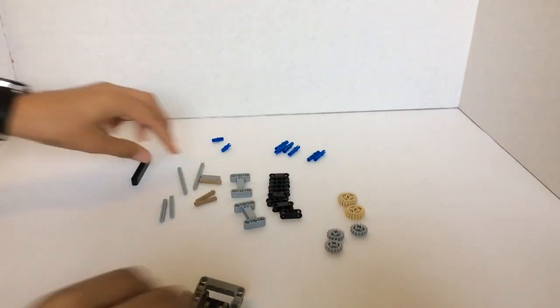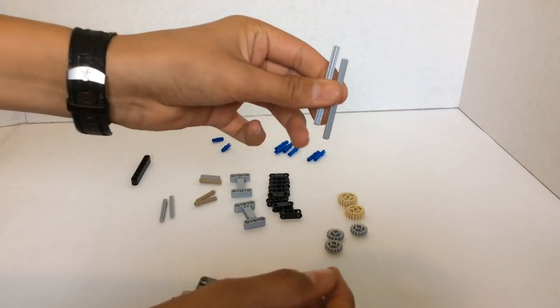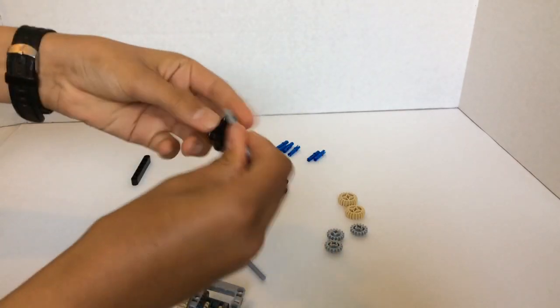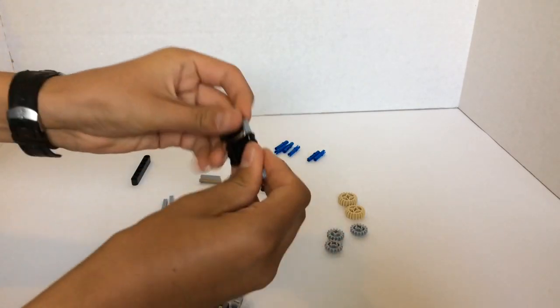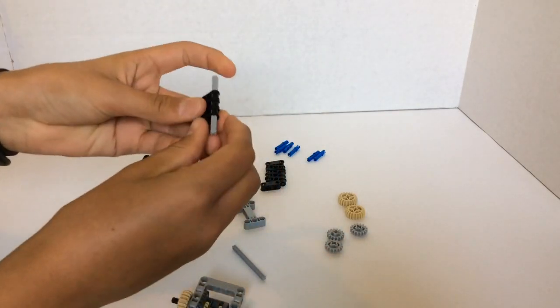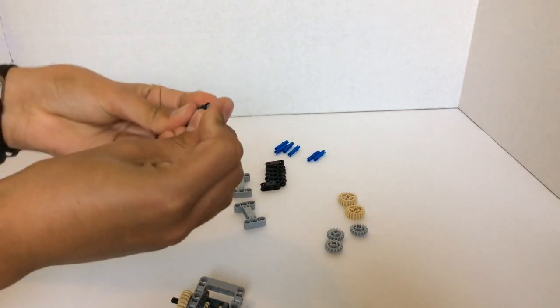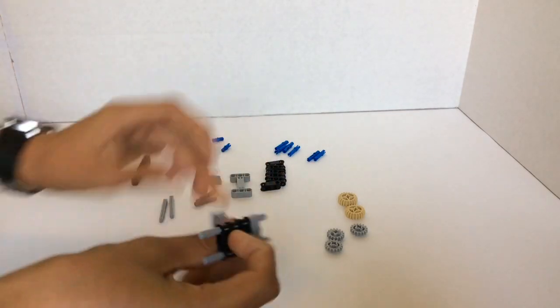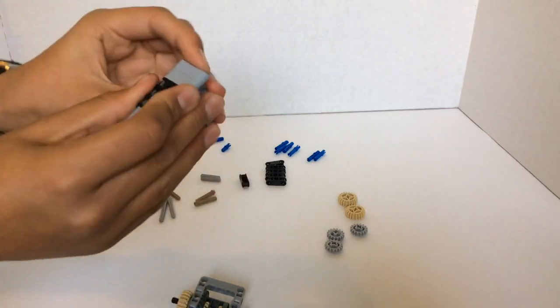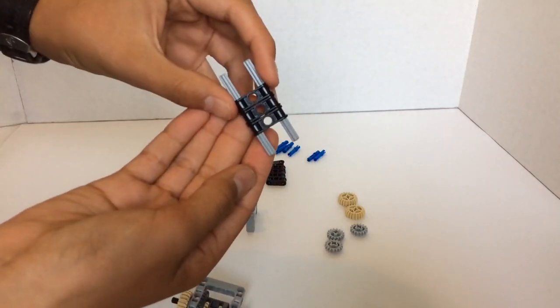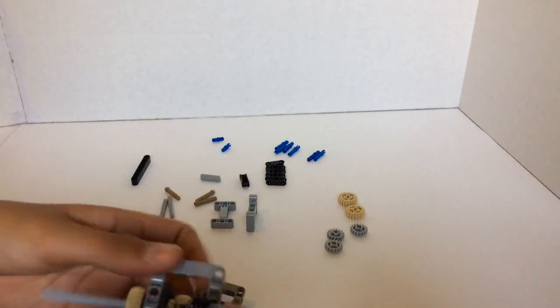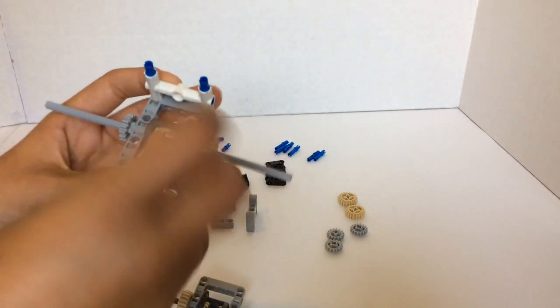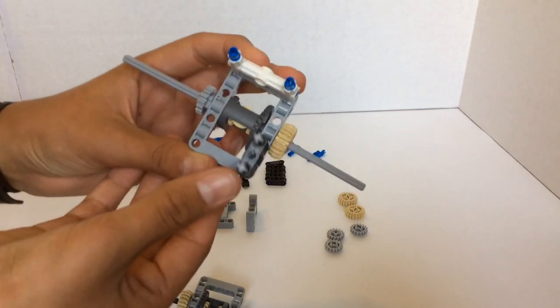And then we're going to take the seven stud beams and put three of these three stud beams in the middle. Make sure they're centered. And you can use other pieces to make sure they're lined up properly, just to make sure there's two studs on either side. And then you're going to put this right here next to the tan gear.